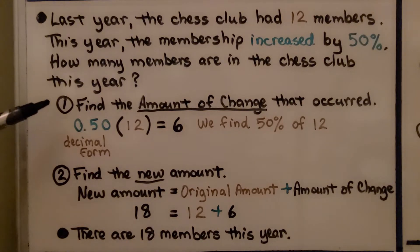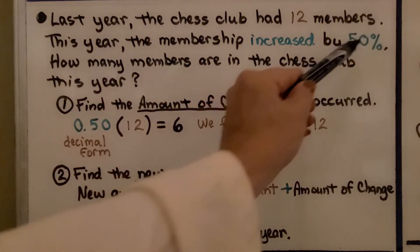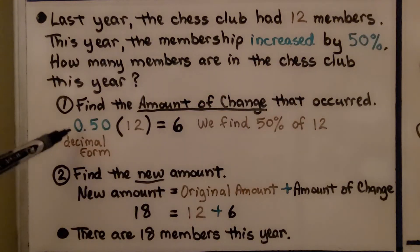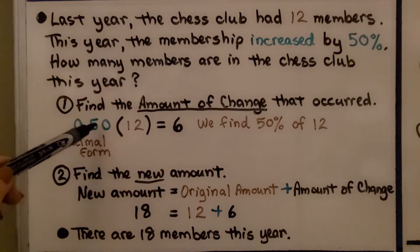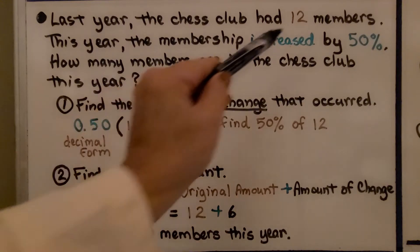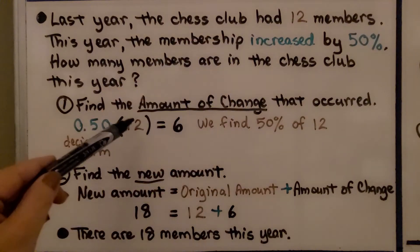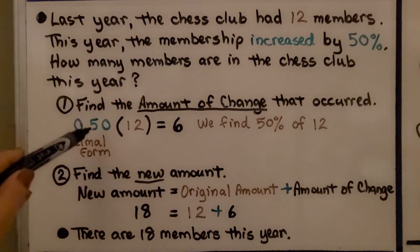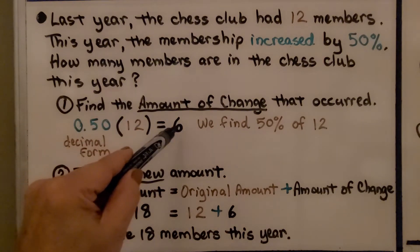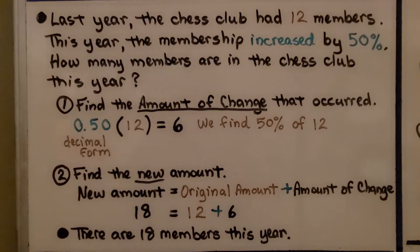The first step is we find the amount of change that occurred. We're going to write 50% as a decimal in its decimal form 0.50. We multiply it by the original amount 12. We have 50% of 12, that equals 6.